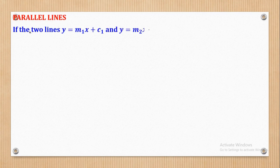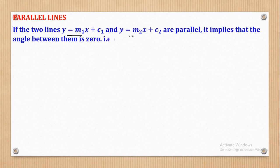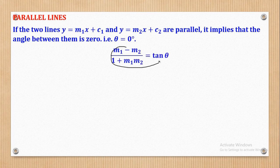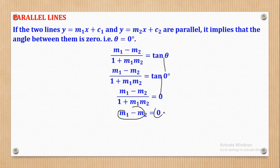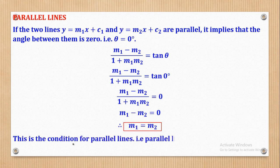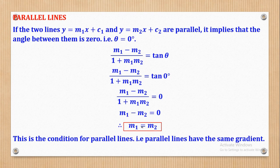Now we go to parallel lines. If two lines with gradients m₁ and m₂ are parallel, the angle between them is 0. Substituting θ = 0 into tan θ = |(m₁ − m₂)/(1 + m₁m₂)| gives tan 0 = 0. Cross-multiplying gives m₁ − m₂ = 0, so m₁ = m₂. Parallel lines always have the same gradient.